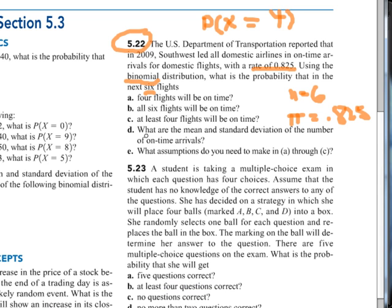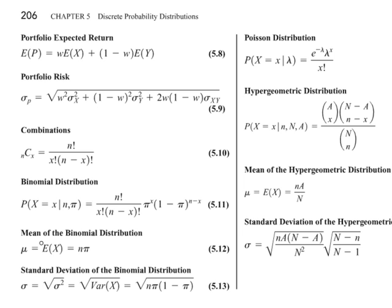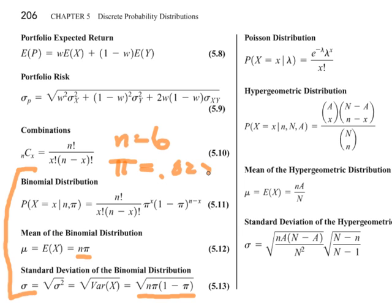Lastly, we have part D, which asks, what are the mean and standard deviation of the number of on-time arrivals? Now in this case, we're going to have to use the equation which was given at the end of the chapter. And so on page 206, we can find the equations at the end of the chapter. And down here, we have binomial distribution equations. And to answer part D, we're going to need n and p for both the mean and for the standard deviation equations. And since we know n is equal to 6 and pi is equal to 0.825, we just plug those values in for each of these equations, and we've got the mean and the standard deviation. That shouldn't be a problem.